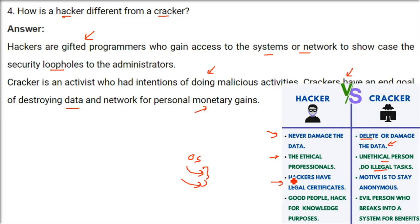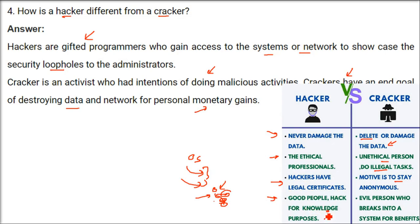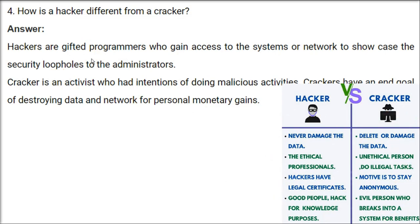Hackers may have legal certificates — they are ethical hackers. People are doing courses to become ethical hackers, and if able to help, they get good money because they are gifted programmers who know where others have made mistakes. Crackers' motive is to stay anonymous — they don't want to show their identity. Hackers hack for knowledge purposes; they are good people. Crackers are evil persons who break into a system for benefits — for money or sometimes just for fun.